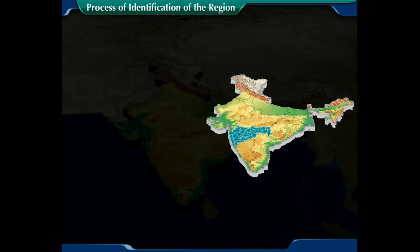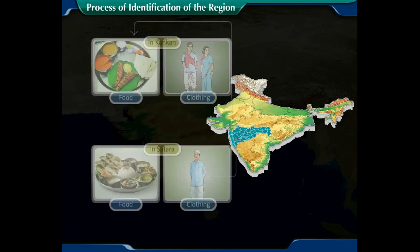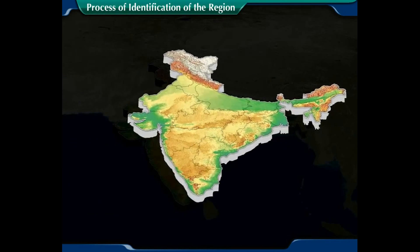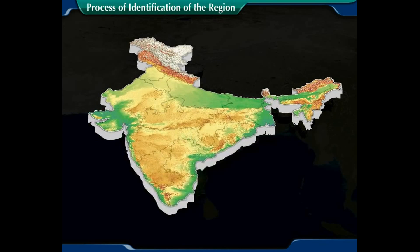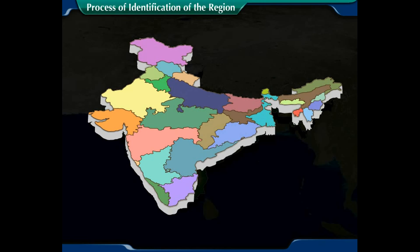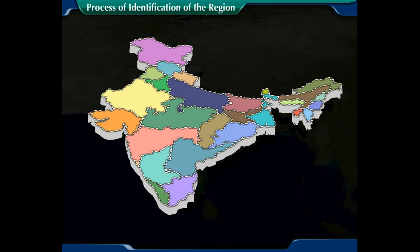Regions are demarcated in such a way that there is very little variation within a region, but at the same time each region is extremely different from the other. The basis for regionalization can be very different, and therefore different regions may be delimited according to the criteria that is used.